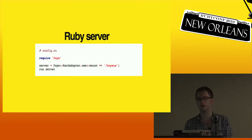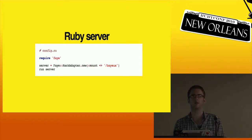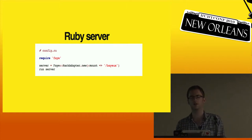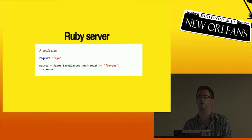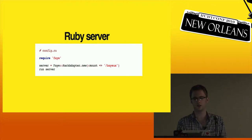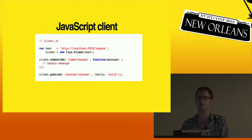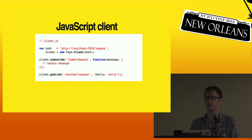Fay is designed to be really, really simple to use. This is how you start a server - it's a Rack application, you just instantiate it and tell it what path on the server you want it to mount to. You can also use it as middleware, so if you install it in front of a Sinatra app it will catch all requests to the slash Bayeux path and delegate anything else down the stack. In the browser, you just make a client and tell it what URL the host lives on.